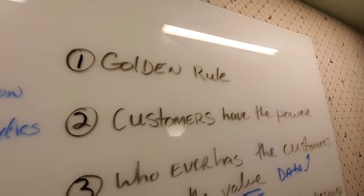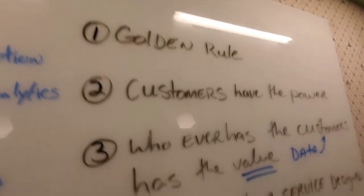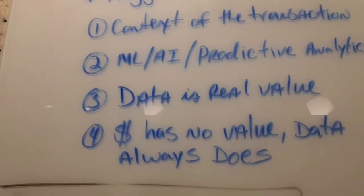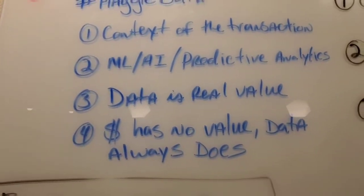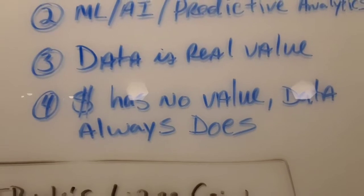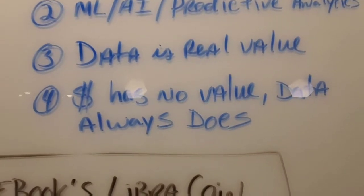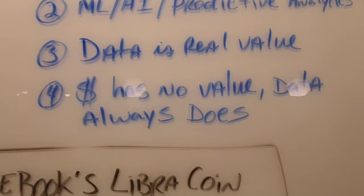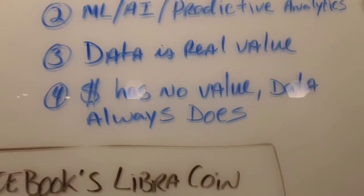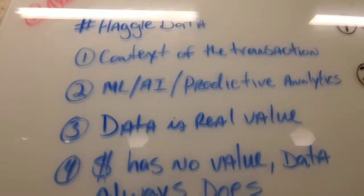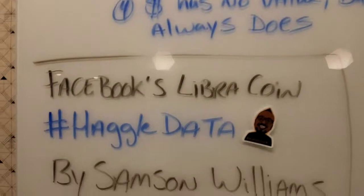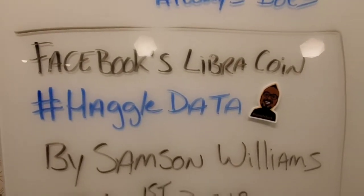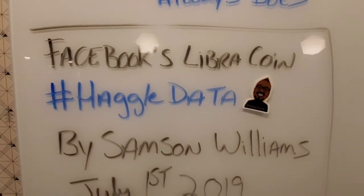What Facebook actually wants — they don't actually want the money. Following the golden rule, they actually want the value, which is data. Data is the real value. You have to come to terms that money has no value — it's a practice of faith — but data always has value. And this is the haggle data.